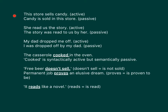More examples. 'This store sells candy' is in active voice. 'Candy is sold in the store' is in passive voice. 'She read us the story' — active voice. 'The story was read to us by her' — passive voice. 'My dad dropped me off' — active voice. 'I was dropped off by my dad' — passive voice.